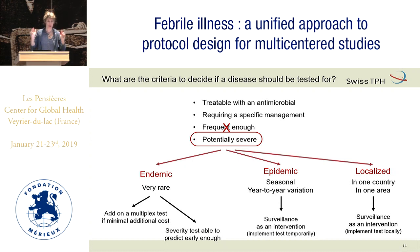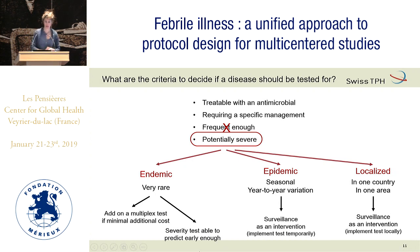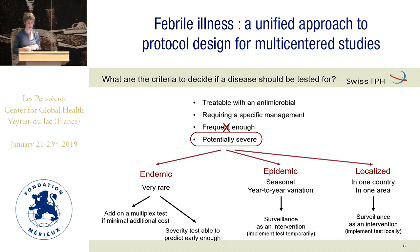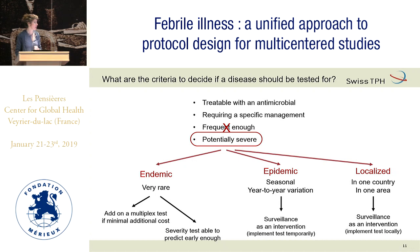The other two difficult situations are epidemic-type infections with high seasonal or year-to-year variation, and diseases that are rare and very localized. In both cases, we should rather do surveillance as an intervention — temporarily, when you detect an epidemic, you add the test, and you remove it when the epidemic is over. Not testing every patient each time they come with fever.